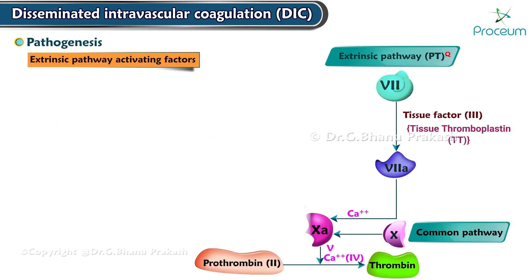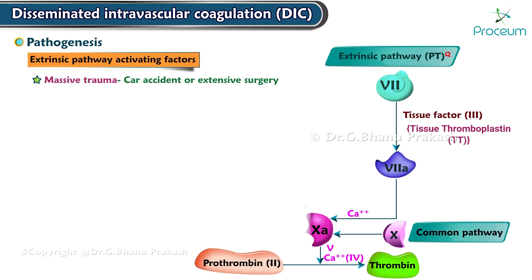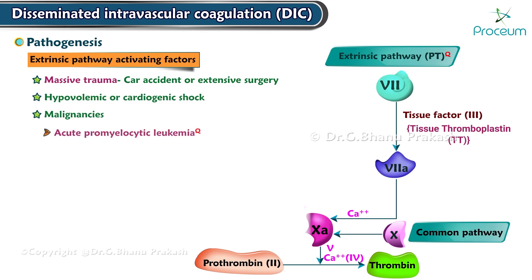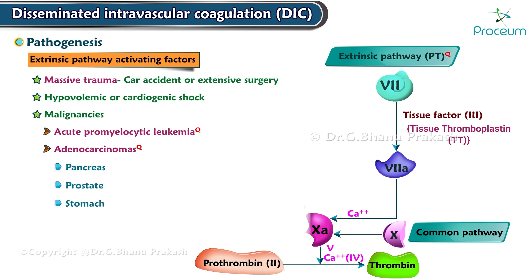Some examples where the extrinsic pathway is activated include massive trauma like a motor vehicle accident or extensive surgery, hypovolemic or cardiogenic shock, malignancies like acute promyelocytic leukemia, adenocarcinomas of the pancreas, prostate carcinoma, stomach cancer, lung carcinoma, breast carcinoma, etc.